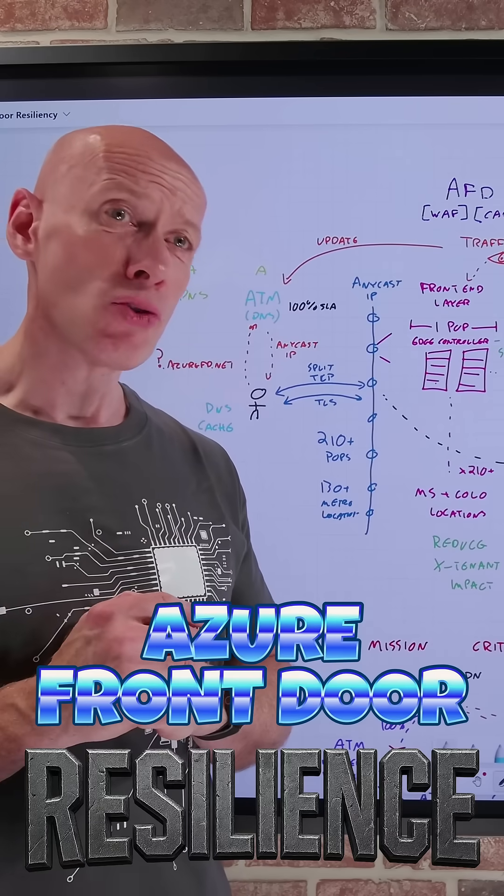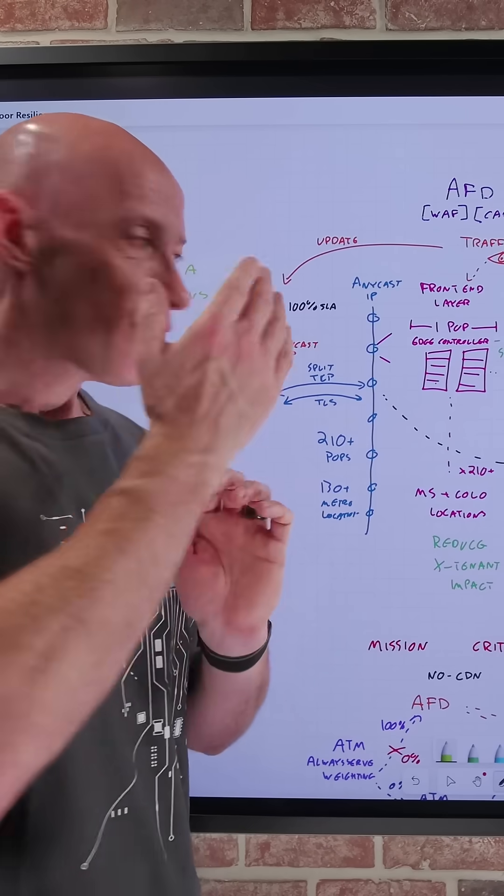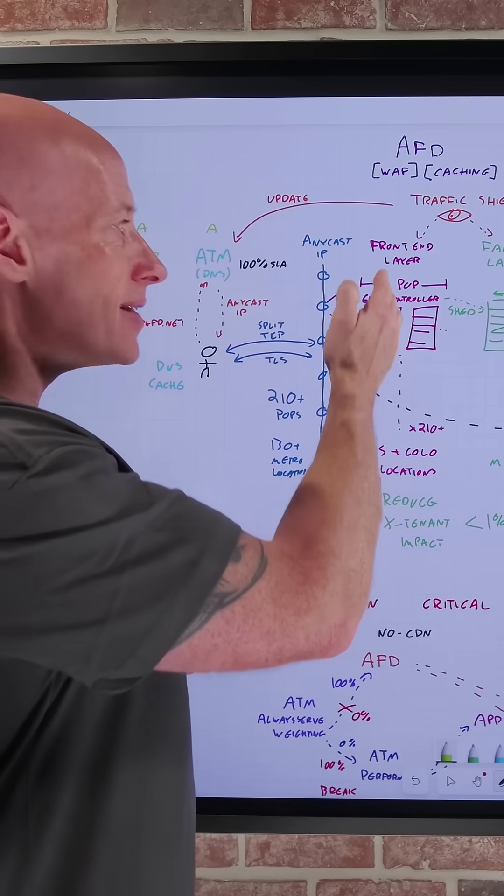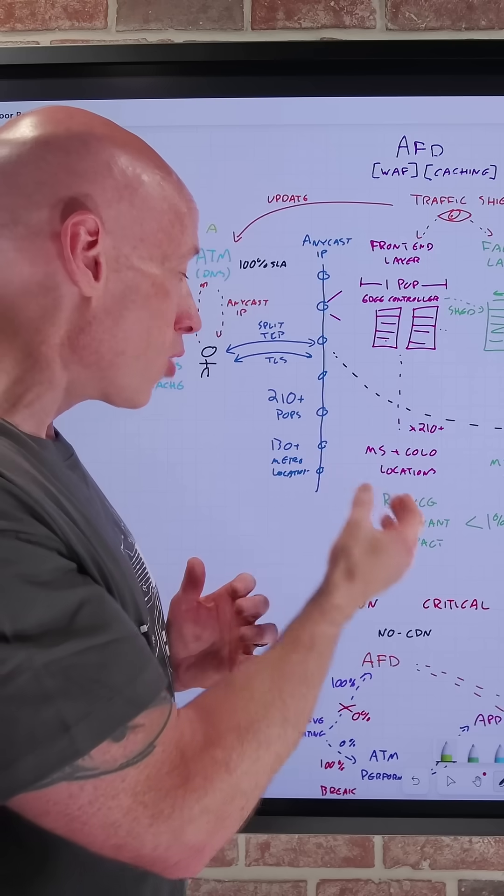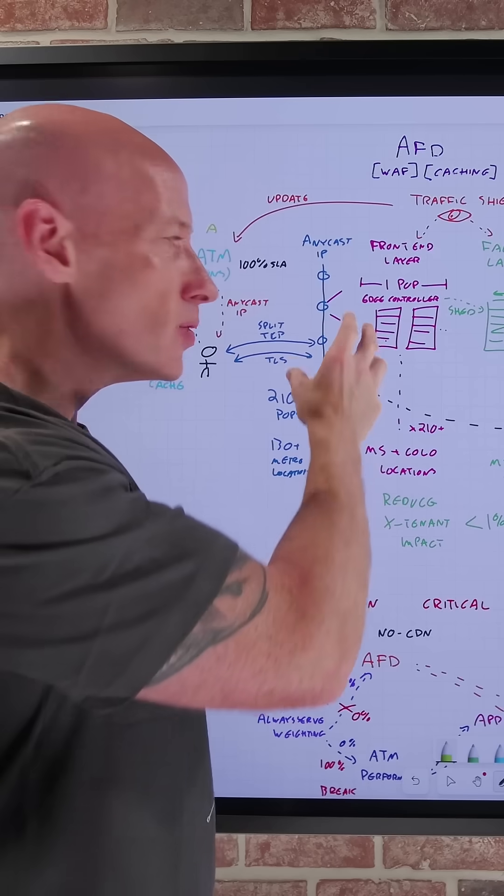So in this short, I want to talk about Azure Front Door Resiliency that offers that layer seven global load balancing. Its first layer is a set of 210 plus pops over 130 metros that runs in a multi-rack, highly distributed architecture.